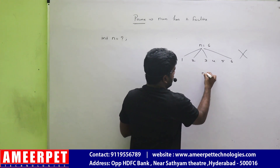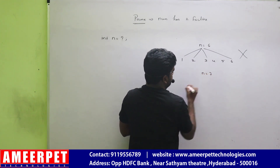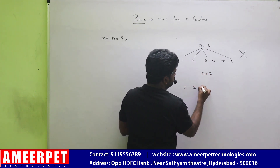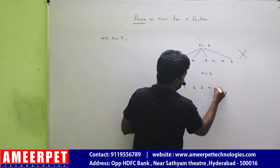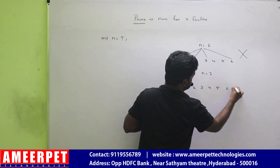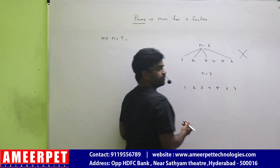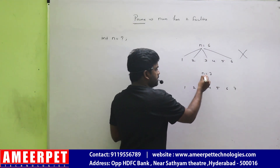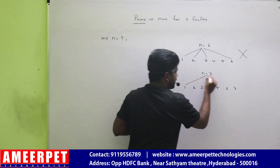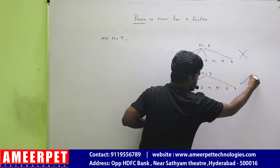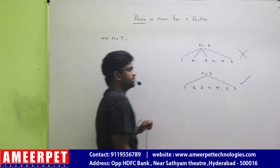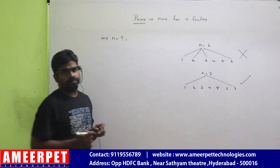If you take n equals to seven: one, two, three, four, five, six, seven. How many factors are there? One and seven — yes, it is prime.